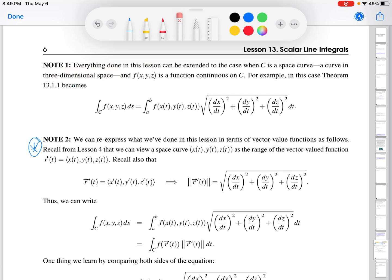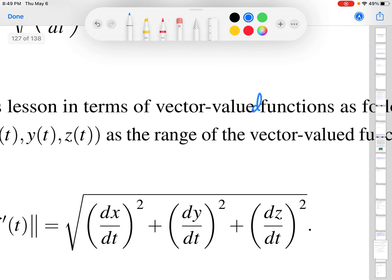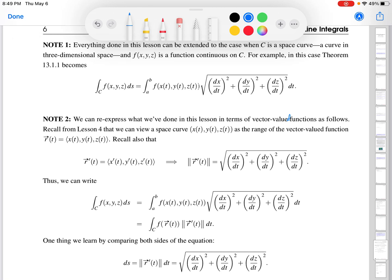Okay, so now back to what I had mentioned earlier about the alternate way to think about all this. And the alternate way is using vector-valued functions. So recall from a long time ago in this course, lesson four, that we can view a space curve as the range of the vector-valued function r of t equals x of t, y of t, z of t. Recall also that when we take the derivative of r of t, we're just differentiating component-wise. And if we were to take the norm of this, it'd be the square root of the sum of squares, right? So that's how we define taking the norm of a vector.